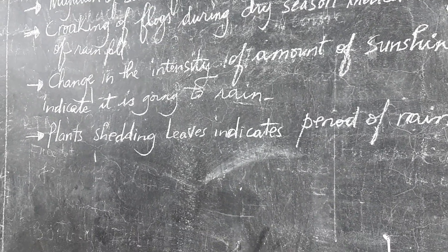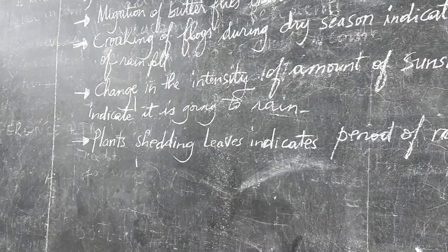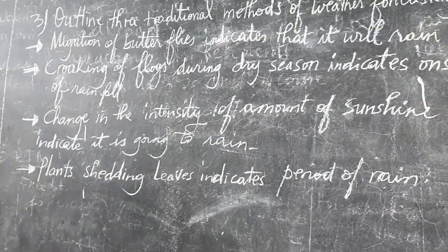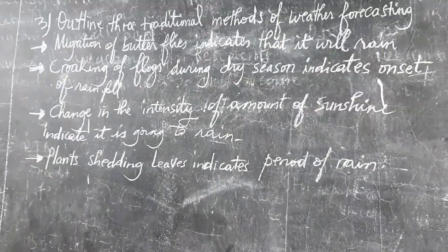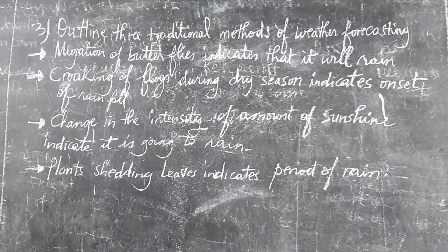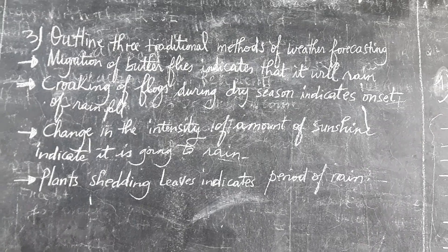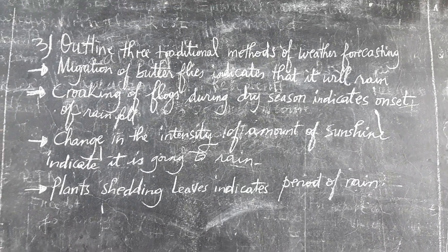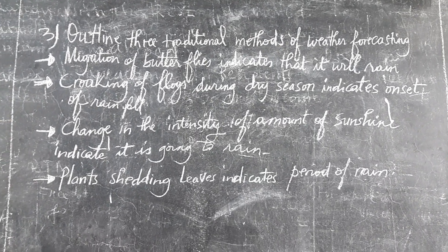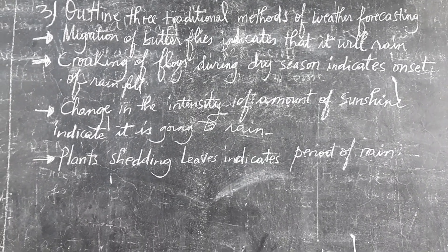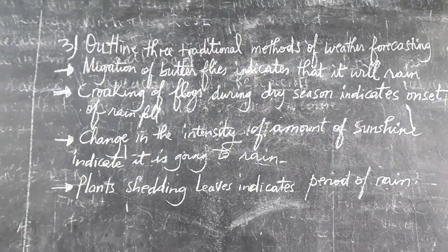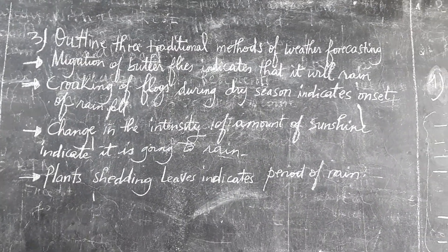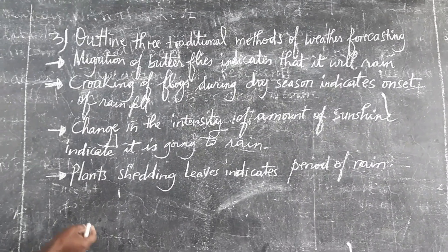In the ancient time, people were looking at the reducing amount of sunshine and started imagining that it was going to rain. So therefore, the change in sunshine intensity is a traditional method of weather forecasting.